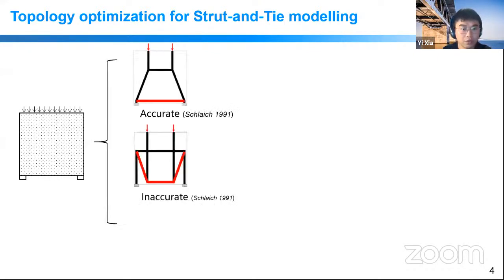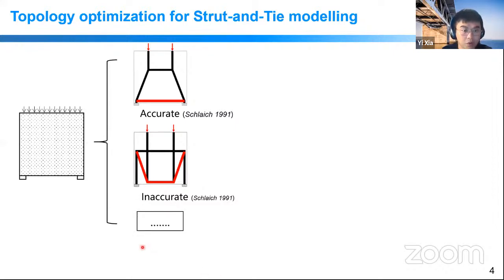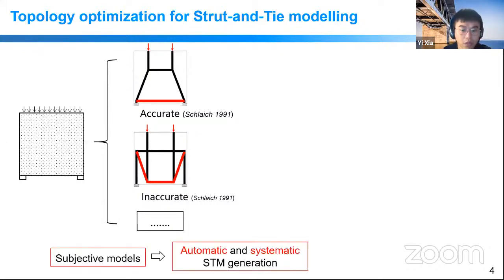For designing a deep beam, there could be infinitely many available models. Two models proposed by previous researchers illustrate that design based on an accurate model gives a more economical result than an inaccurate model. Determination of models requires lots of subjective choices. Using unsuitable models may result in an overly conservative design that costs more steel. Therefore, automatically and systematically generating strut-and-tie models is of vital importance.